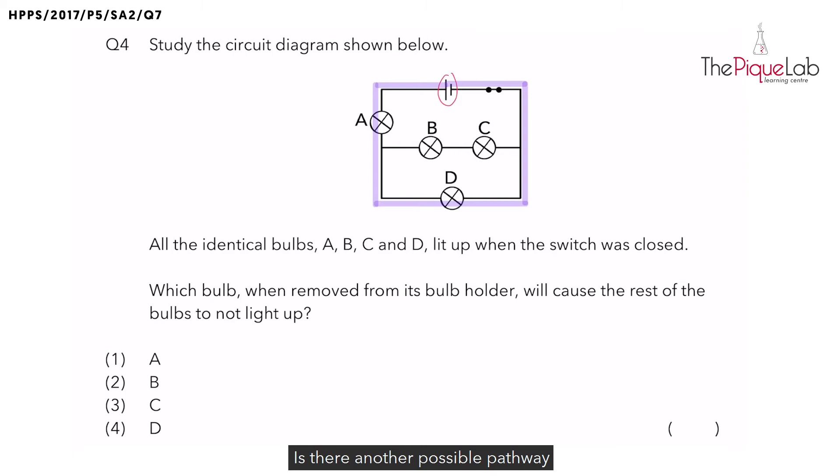Is there another possible pathway for electricity to flow through? Yes, there is. So let's trace that pathway using another color. Again, we start from the battery and electricity will flow through this wire now and flow back to the battery.